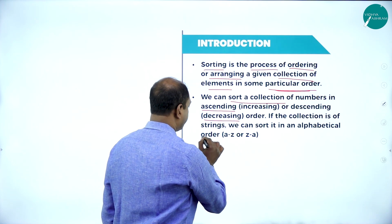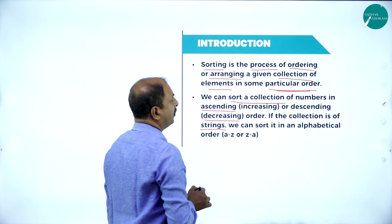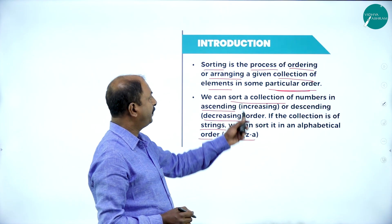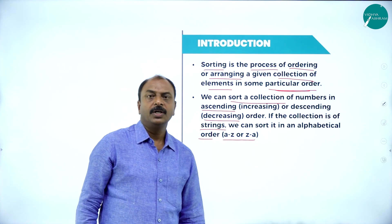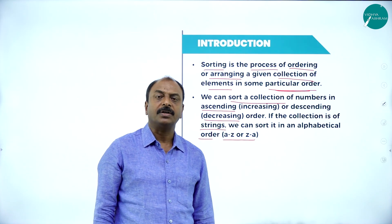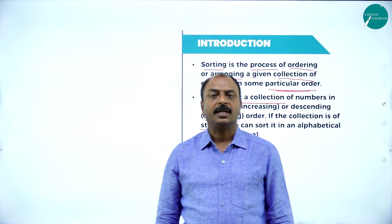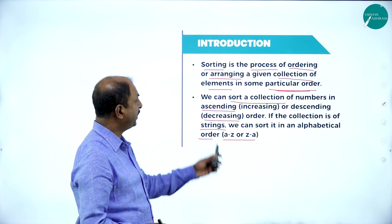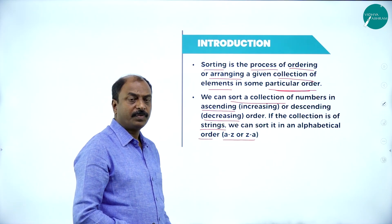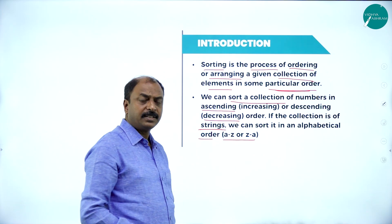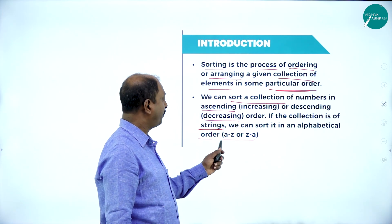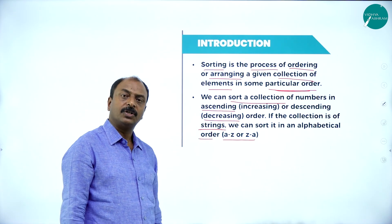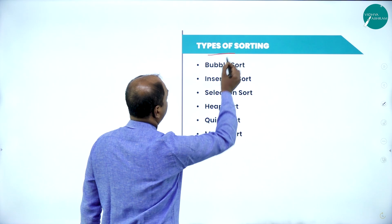If the collection is of strings, we can sort in alphabetical order, A to Z or Z to A. So this is the basic definition of sorting — sorting is a process or technique where the given elements are arranged in a particular order, either ascending or descending order. With respect to strings, we can arrange the list either from A to Z or from Z to A.